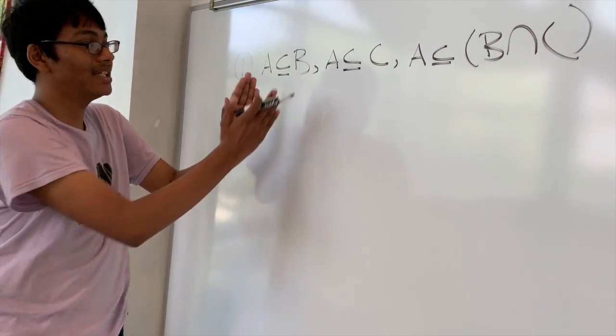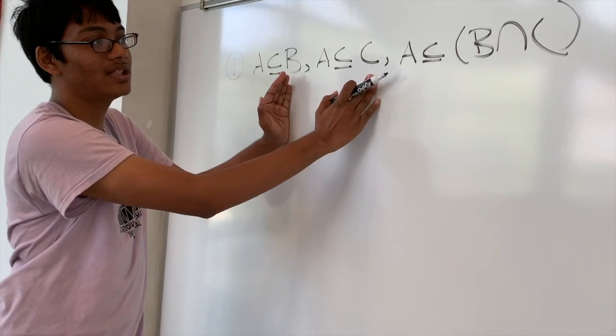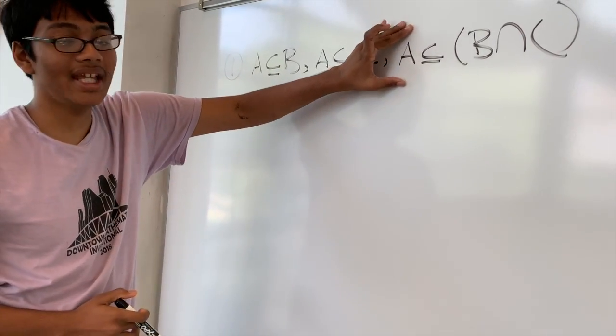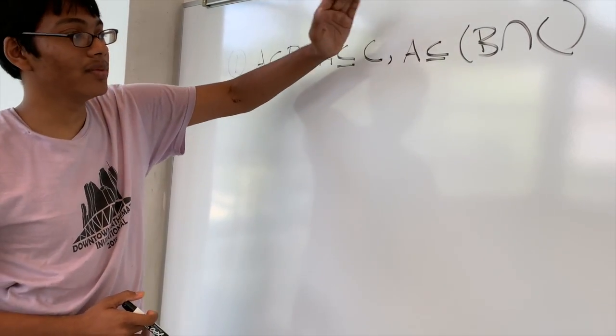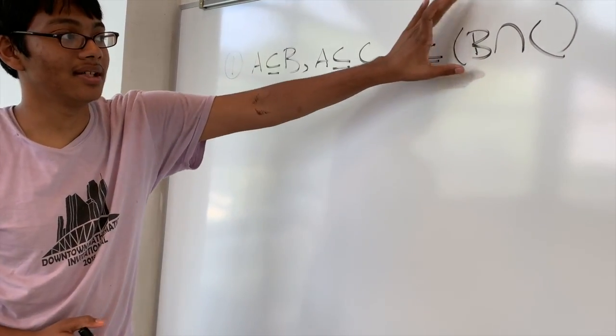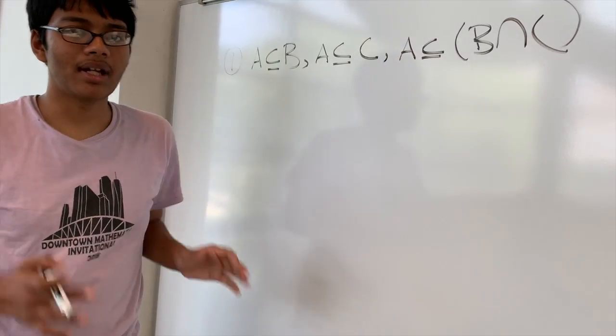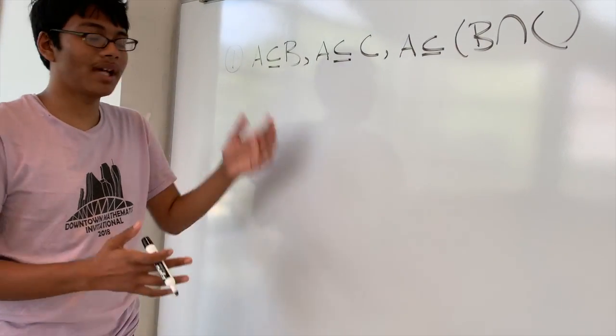So when you take the intersection of these two sets, all the elements of A will be in the intersection of sets B and C. But how can we show that mathematically?